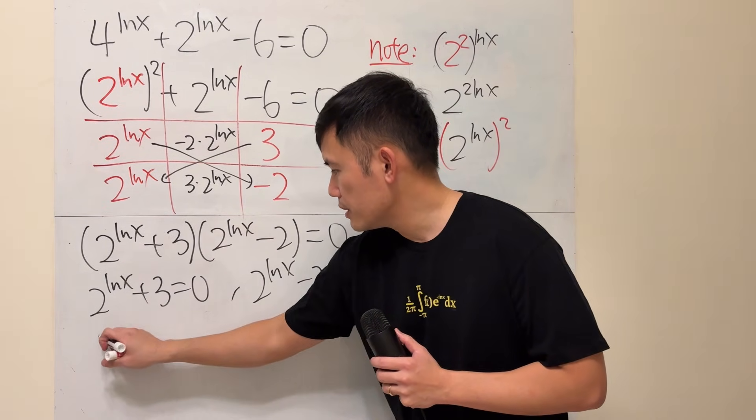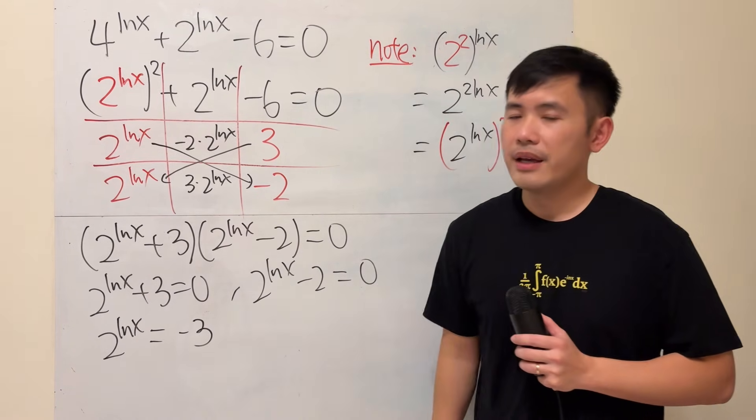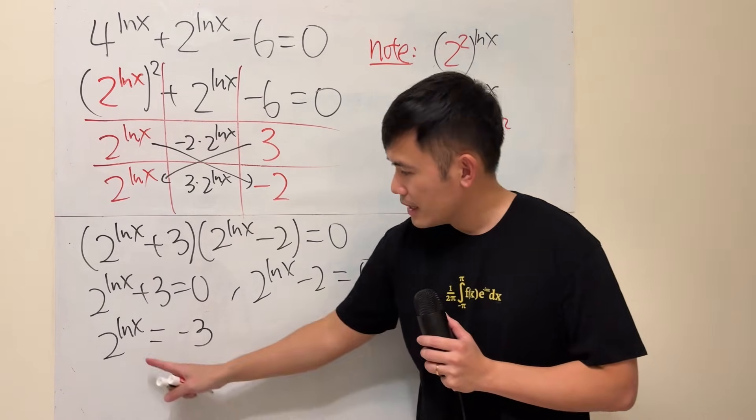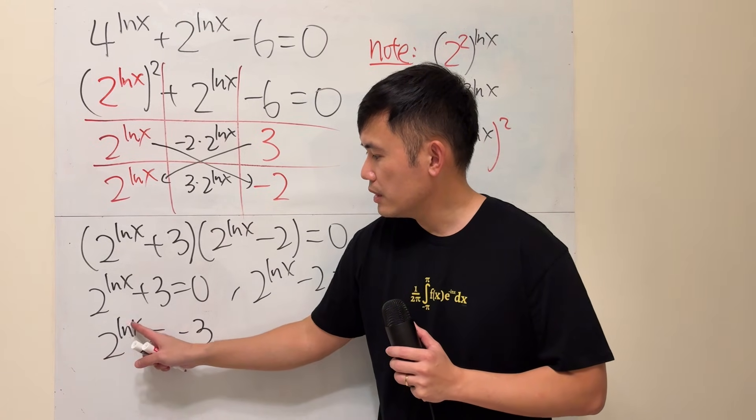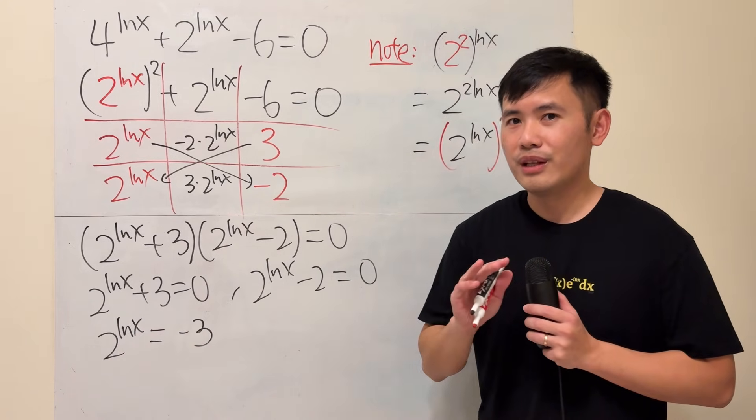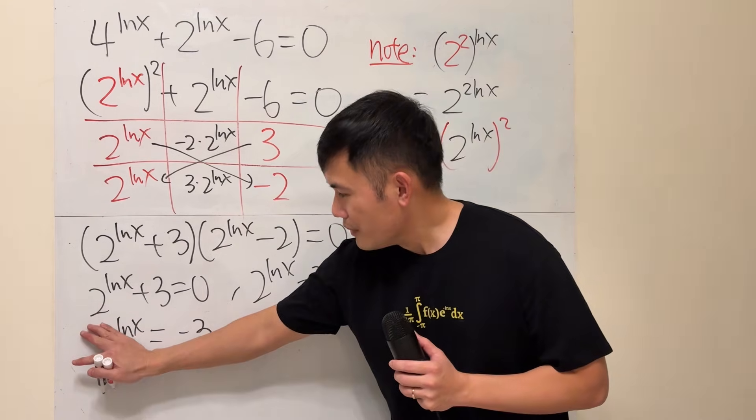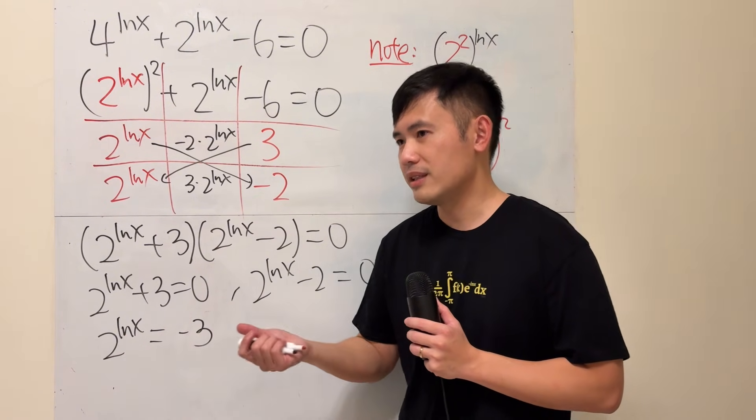Okay, subtract 3 from both sides. 2 to the ln x power equals negative 3. Now, here's the deal. When we have a positive constant raised to a variable power, can that ever be negative? No. If you have ln x equal to negative 3, that's solvable, right? It's just e to the negative 3 power. That's okay.